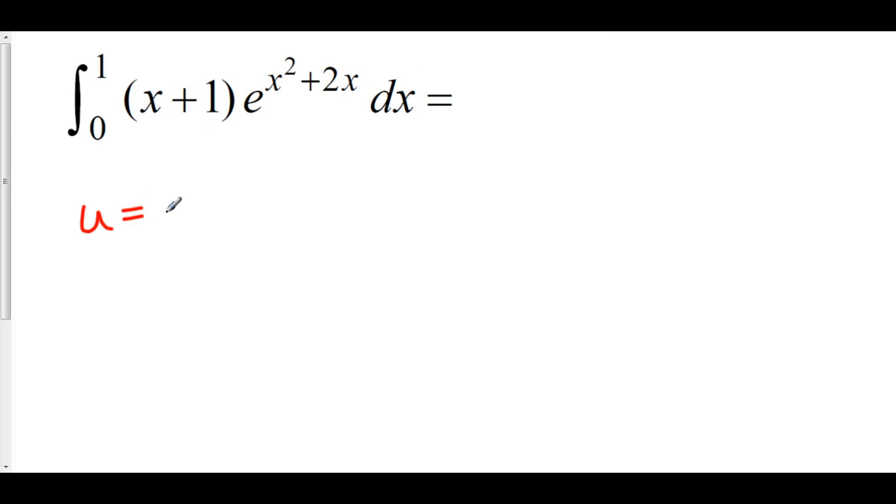Here, let's try u is x squared plus 2x. That means that du is equal to 2x plus 2 quantity dx. The quantity is because the dx comes after the entire integrand. Now, I don't have a 2x plus 2. I have an x plus 1, which I can easily get by factoring out a 2. So, du is equal to 2 times x plus 1 dx.